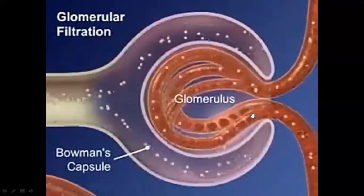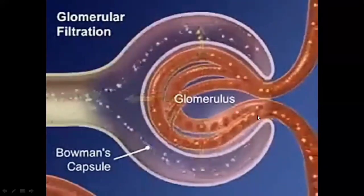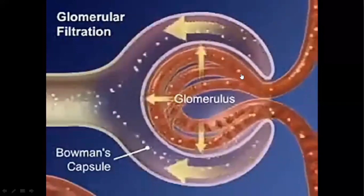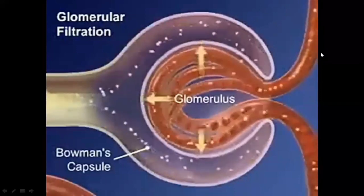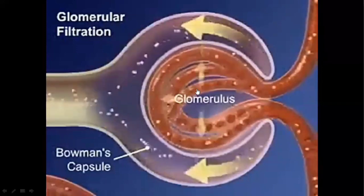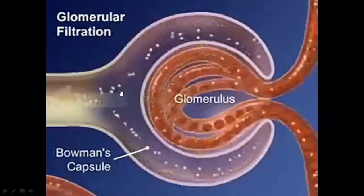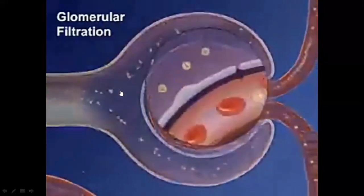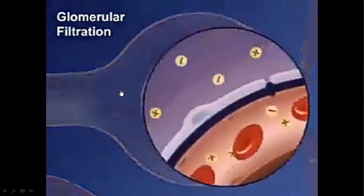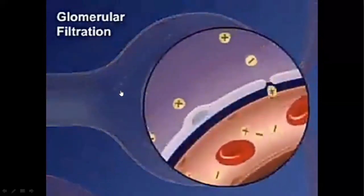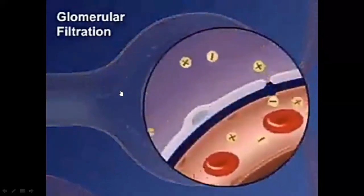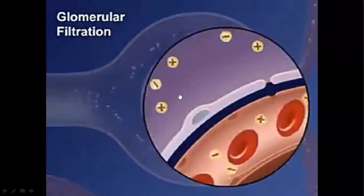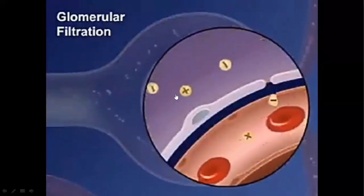The efferent arteriole carries blood and then divides into tiny capillaries before leaving through the efferent arteriole. There are two main mechanisms — two main factors — that regulate glomerular filtration, which determines how plasma is filtered out from the blood into Bowman's capsule.